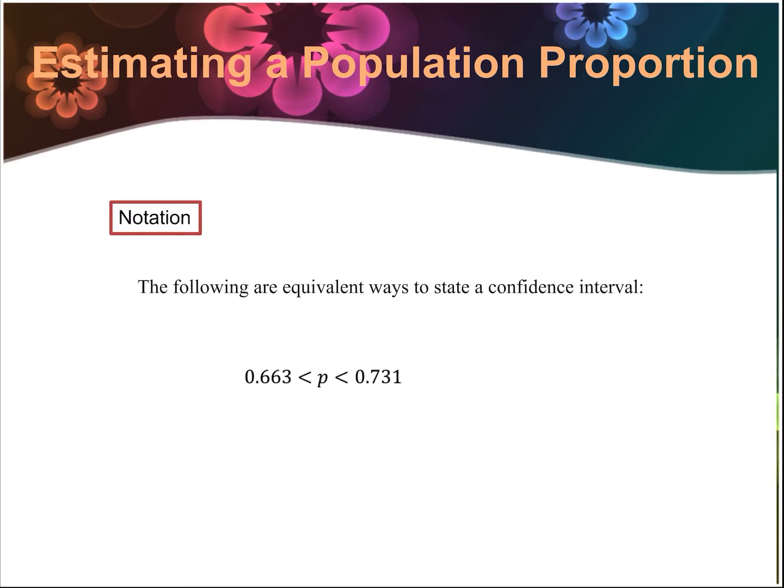There are several common ways to write a confidence interval. One way is with an inequality: p is between 0.663 and 0.731. You can also use interval notation: (0.663, 0.731), where the left side is p-hat minus the margin of error and the right side is p-hat plus the margin of error. The last way is concise: p-hat ± margin of error, so 0.697 ± 0.034.